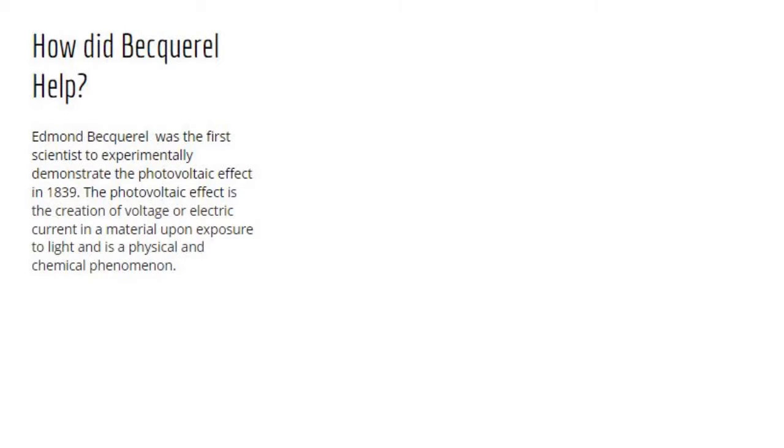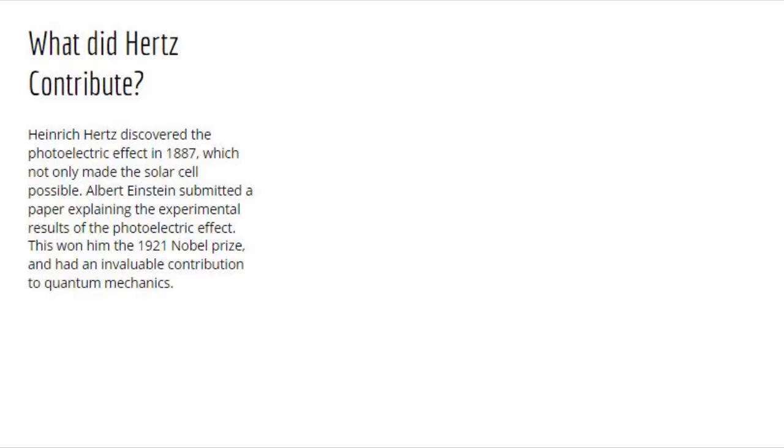Before the creation of the first solar cell, Becquerel was the first scientist to experimentally demonstrate the photovoltaic effect in 1839. This effect is the creation of voltage or an electric current in a material upon exposure of light and is a physical and chemical phenomenon. And then Hertz discovered the photoelectric effect in 1887, which made solar cells possible. Albert Einstein then submitted a paper explaining this experimental result and won the Nobel Prize in 1921.